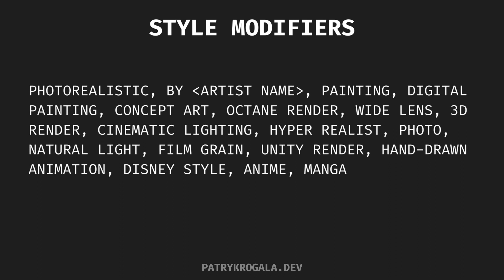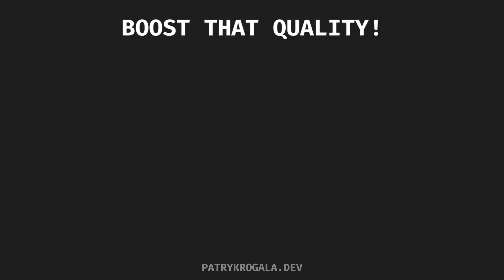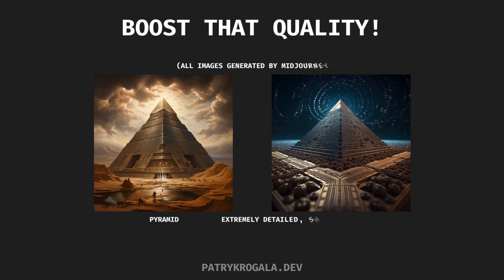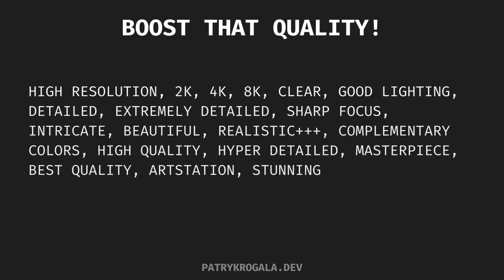Here are some you can play with: photorealistic, digital painting, cinematic lighting, and many more. Remember how we want Instagram-worthy pics? Quality boosters. From ordinary to wow, by adding terms like beautiful, 4K, and stunning, the AI steps up its game. High resolution, detailed, masterpiece — keep these in your toolbox.